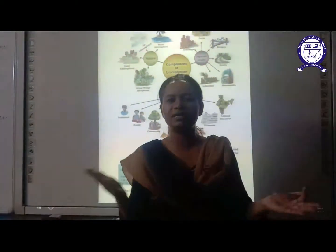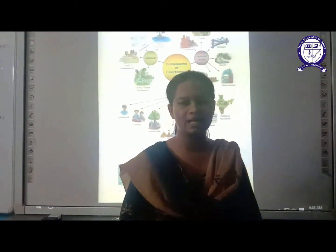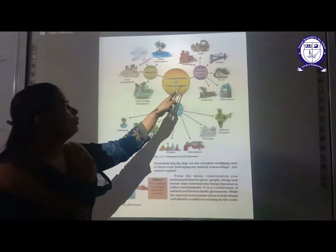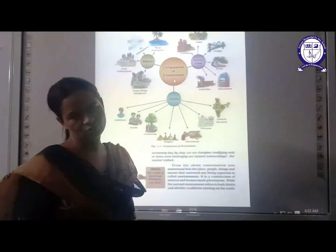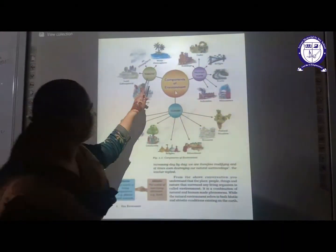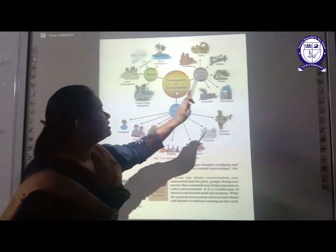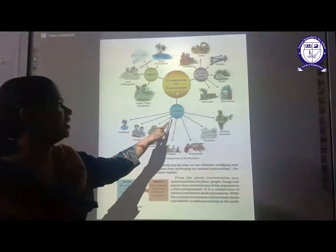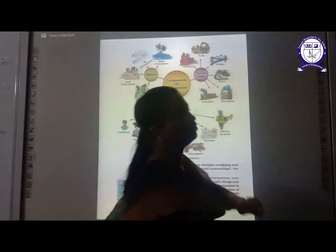Environment can be natural environment or human-made environment. Now, we have three components of environment. The first one is natural component of environment. The second one is human-made component of environment. And the third is human. If we talk about the natural component of environment, wherever you see the word 'natural,' it means you are deriving something from nature.